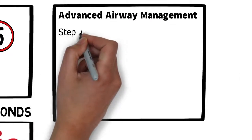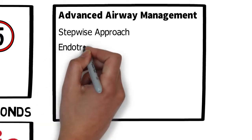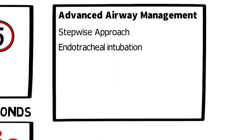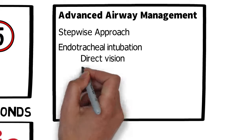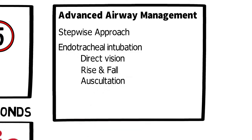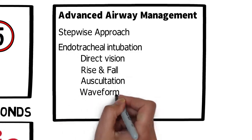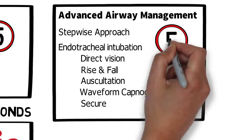For advanced airway management, key principles include a stepwise approach: starting with simple manoeuvres like a head tilt chin lift or jaw thrust, moving on to an OPA, then considering an NPA, iGEL, or endotracheal intubation. For ETT insertion we'll look for the tube inserted under direct vision, rise and fall of the chest, bilateral auscultation and over the epigastric region, waveform capnography, and that the tube is secured. No interruption of longer than five seconds of CPR at any point.